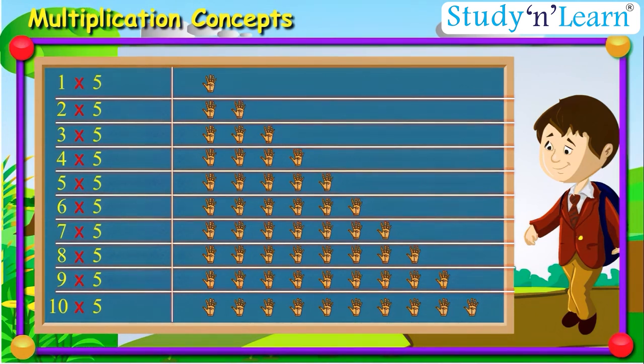So the table would be: 1st row has only 1 hand, so it will be 1 into 5 is equal to 5 fingers. 2nd row has 2 hands, so it will be 2 into 5 is equal to 10 fingers.